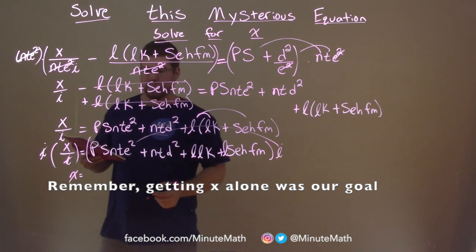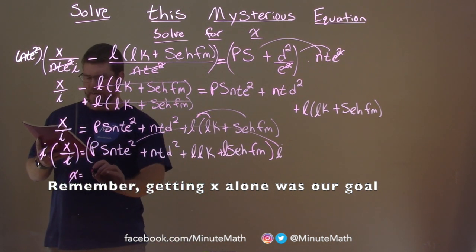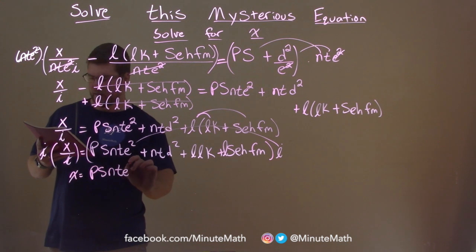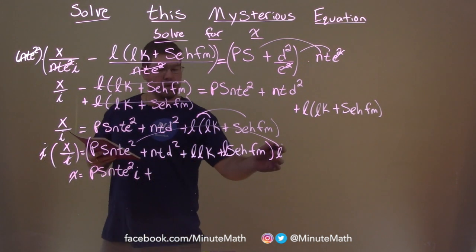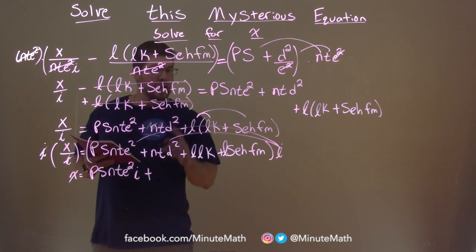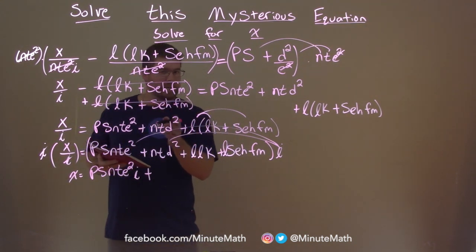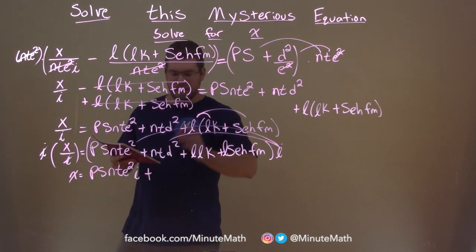The first part kind of wrote through it, but it's all good. We have p, s, n, t, e squared times that i plus i to the second part. Don't forget everything. It's always in the details, right? You have to examine all the details to get the truth here.